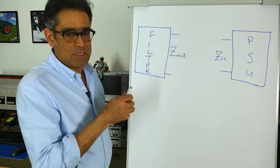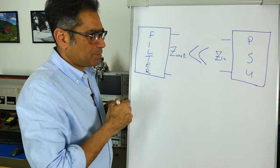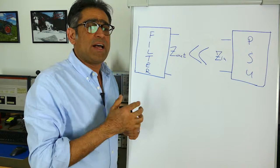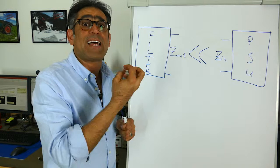Now measuring the output impedance of the filter is not that difficult. Measuring the input impedance of the power supply is not as straightforward, because in order for the power supply to operate you're going to have to put some capacitors on the input and of course that is part of the filter and not part of the power supply. Luckily we can estimate these quite easily.